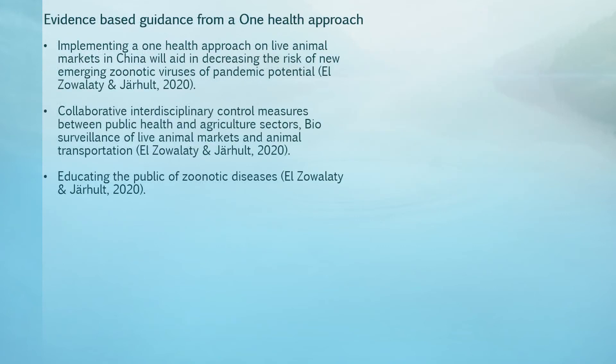Evidence-based guidance to prevent future pandemics includes implementing the One Health approach. There is an urgent need for a multi-disciplinary One Health approach to address dynamic health challenges on the animal-to-human environmental level. SARS is a One Health concern due to the SARS coronavirus being a zoonotic disease. We need to implement a One Health approach in the animal markets in China. These measures will include collaborative inter-disciplinary control between the public health sectors and agriculture, bio-surveillance of live animal markets and animal transportation, and educating the public on zoonotic diseases.